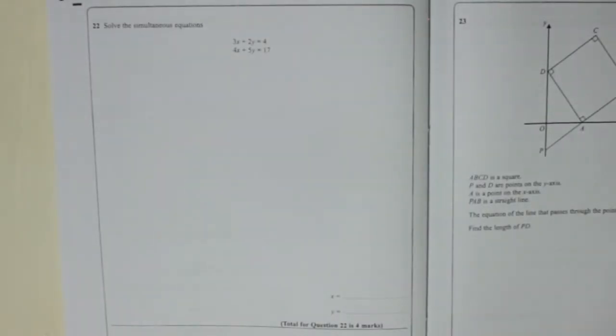Question 22. Solve the simultaneous equations. 3x plus 2y equals 4. 4x plus 5y equals 17.